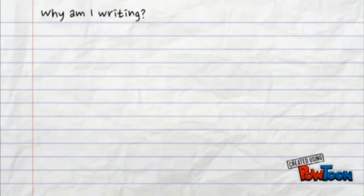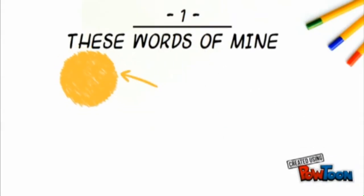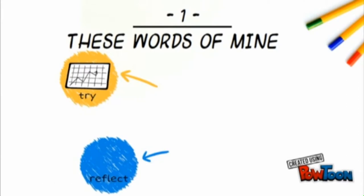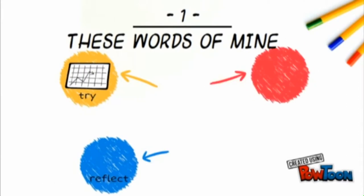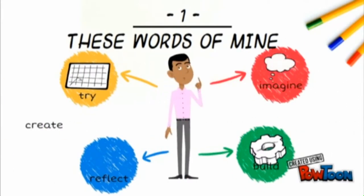Not all writing is expository. Sometimes an author does not intend to describe or explain. There are infinite reasons to write and all of them are equally valid. For example, an author may want to experiment, imitate, reflect, practice, or create.